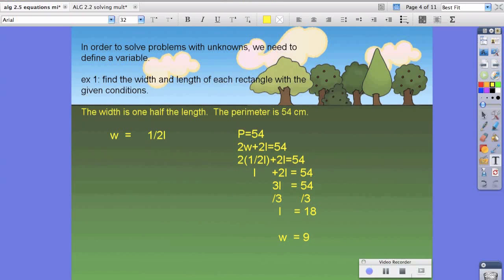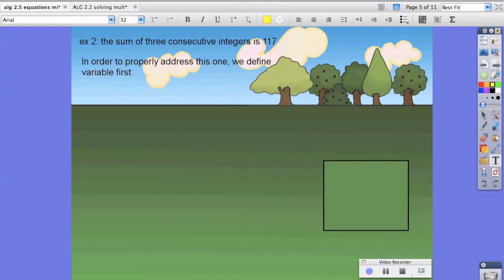Now we know what our length and width are, let's work on the next problem. For example two, it says the sum of three consecutive integers is 117. Because we know how to translate, it says the sum of means we're going to add up three consecutive integers, and that is 117.